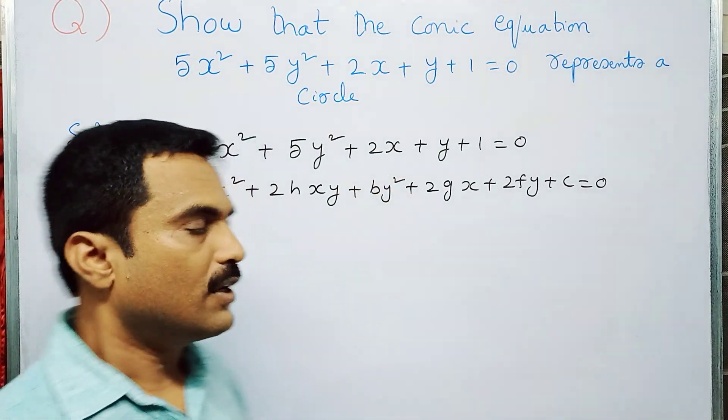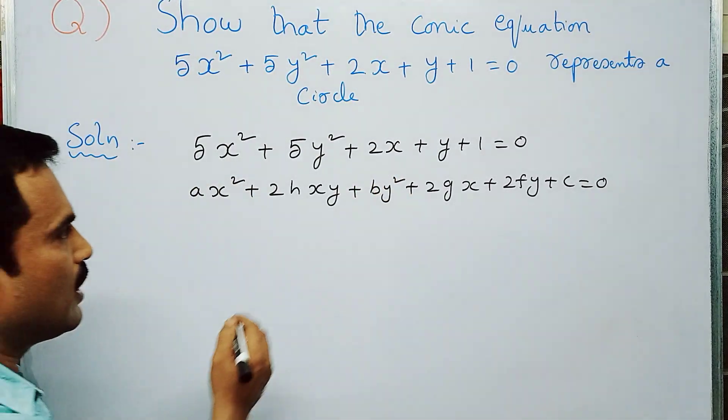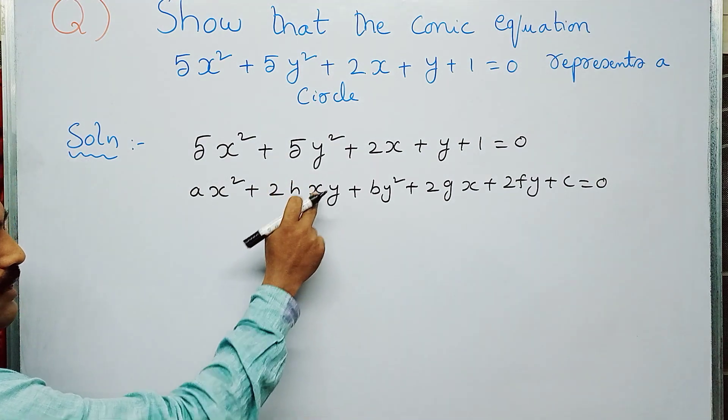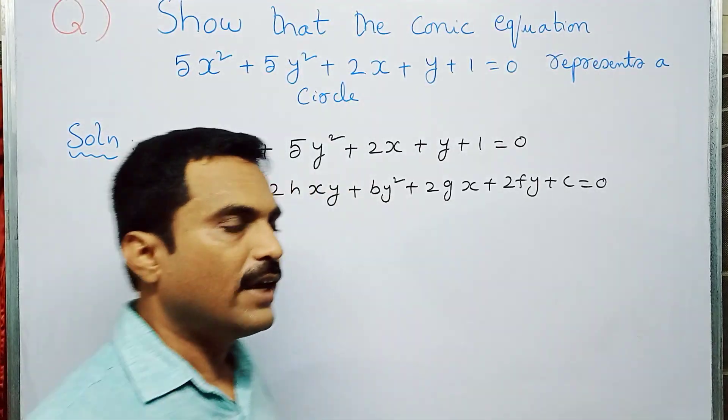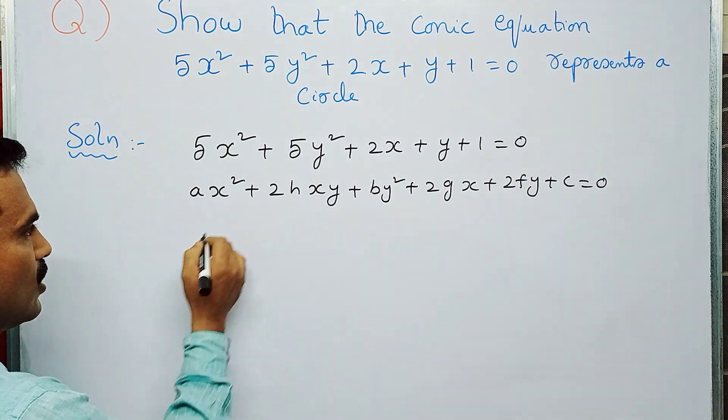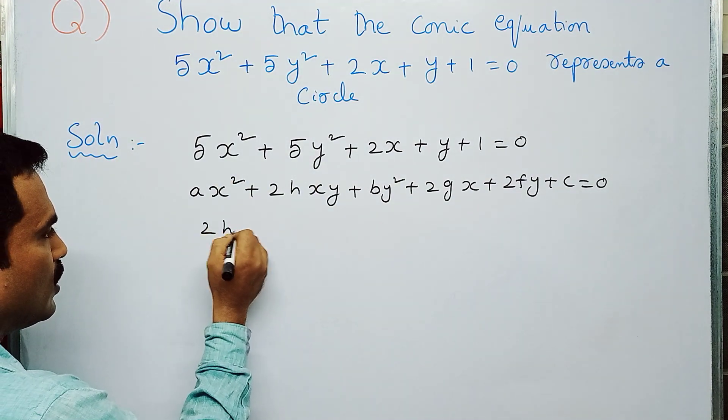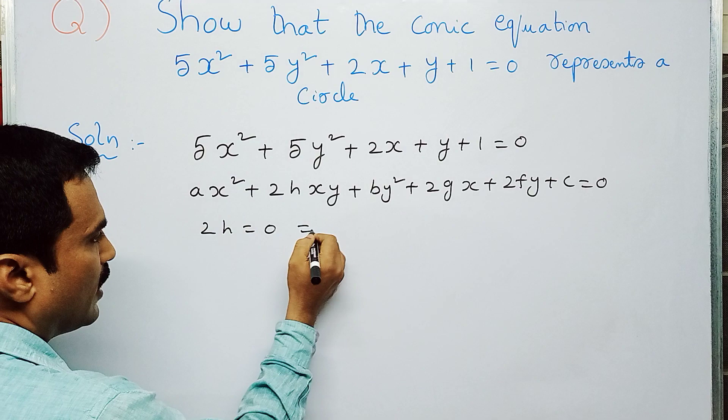Here, 2hxy - since there is no xy term, we can conclude that the h value is 0. That is, 2h = 0, which implies h = 0.